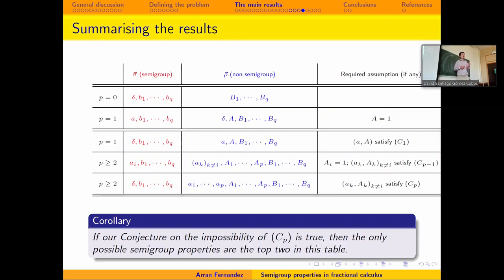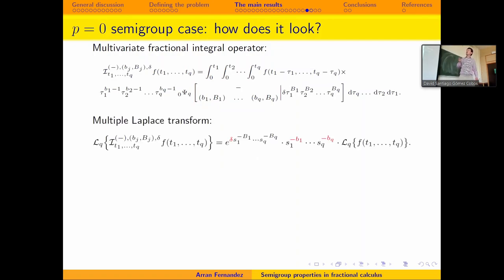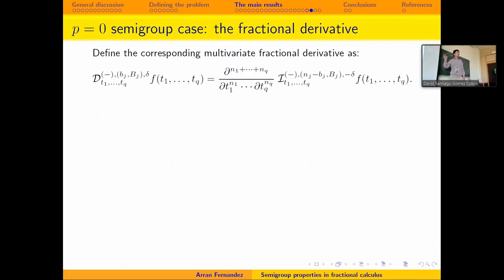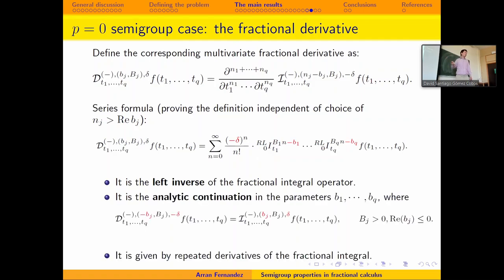Going back to the beginning of the talk: why are we interested in semigroup properties? Because they give a unified model of fractional calculus with integrals and derivatives together. Taking the P=0 semigroup case, the integral operator has a Laplace transform where the red parameters appear as exponents — multiplying two operators adds the exponents, giving the semigroup property. There is the semigroup property and the series formula, and we define the fractional derivative operator as usual: a repeated partial derivative of a fractional integral. All three possible ways of defining the fractional derivative give the same result.